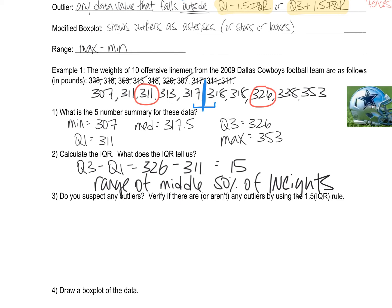Do you suspect any outliers? Verify if there are or aren't any outliers. Here's how we decide if we have any outliers in this. We use the formula, which is way up here. I highlighted both of them. So what I'm going to do is first calculate the fences, which is using these two formulas, and then see if there are any numbers beyond outside the fences.